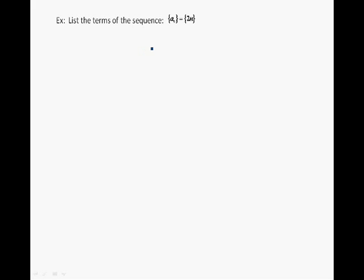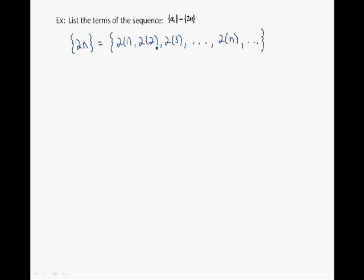Let's now look at an example: list the terms of the following sequence. And here's the solution. I've replaced n with the positive integers 1, 2, 3, ..., n, going on all the way to infinity. And now if we multiply each term by the respective integer, we get the following terms.